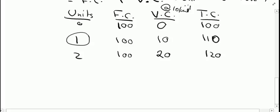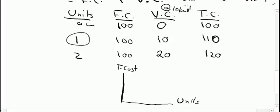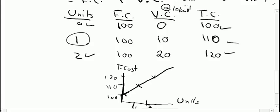Now if I draw the total cost graph with units on the x-axis and total cost on the y-axis: the graph starts at 100 rupees for 0 units, rises to 110 for 1 unit, and 120 for 2 units, and it will keep moving upwards as I increase the number of units produced.